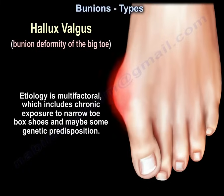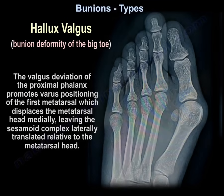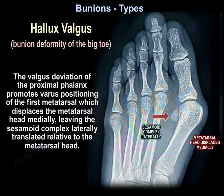Etiology is multifactorial, which includes chronic exposure to narrow toe box shoes and possibly some genetic predisposition. The valgus deviation of the proximal phalanx promotes varus positioning of the first metatarsal, which displaces the metatarsal head medially, leaving the sesamoid complex laterally translated relative to the metatarsal head.